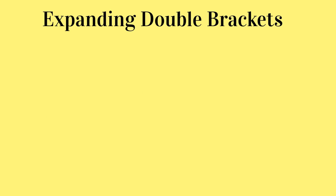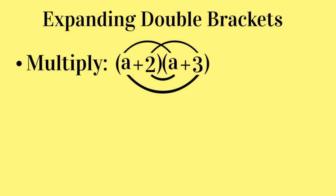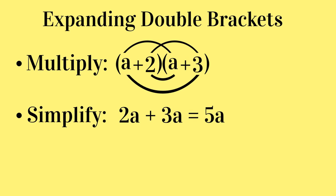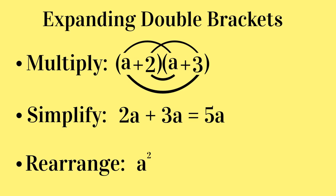Here is a summary of what we have learnt about expanding double brackets. We expand double brackets by multiplying terms from both brackets using the pattern eyebrow, eyebrow, nose and chin. We can simplify the expression by adding together like terms. We rearrange the expression so our final answer starts with a term containing a variable squared, followed by a term containing a variable with no power, followed by a number.